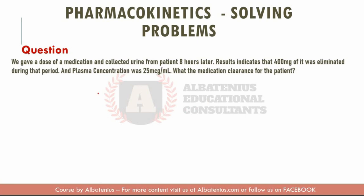We gave a dose of a medication and collected the urine from a patient eight hours later. The results indicated that 400 milligrams was eliminated, and the plasma concentration is 25 micrograms per milliliter. What is the medication clearance for this patient?